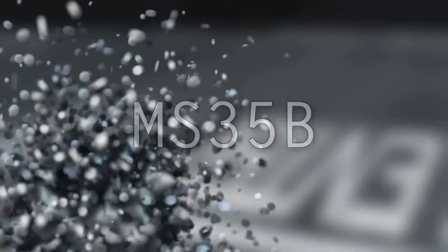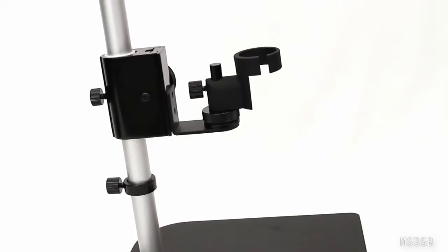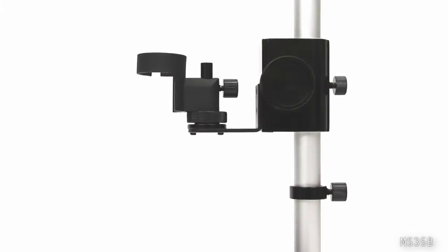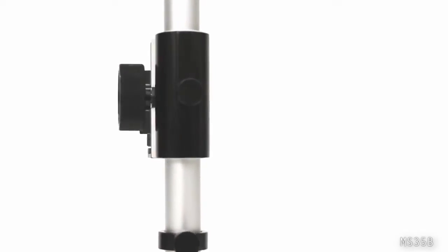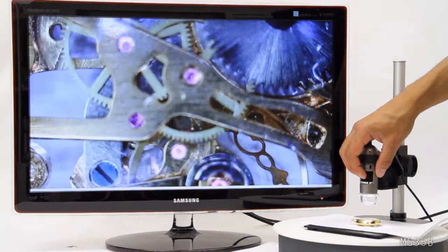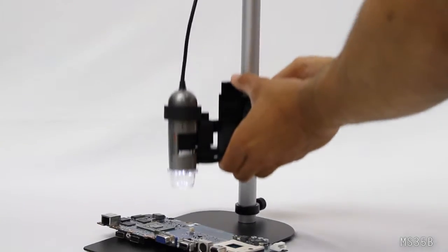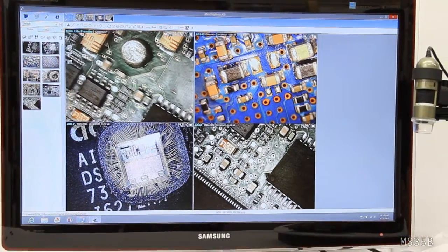Introducing the MS-35B rigid tabletop stand for Dynolite handheld microscopes. Its stable and ergonomic design allows a user to easily adjust the position of a Dynolite vertically, quickly and efficiently with precise control.